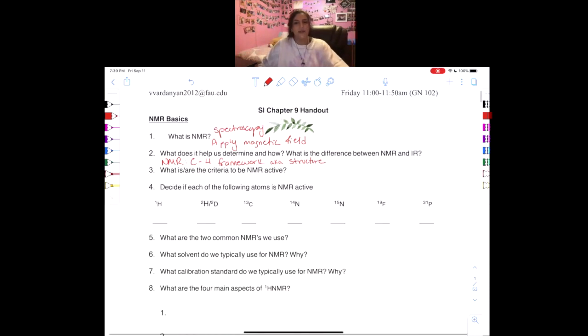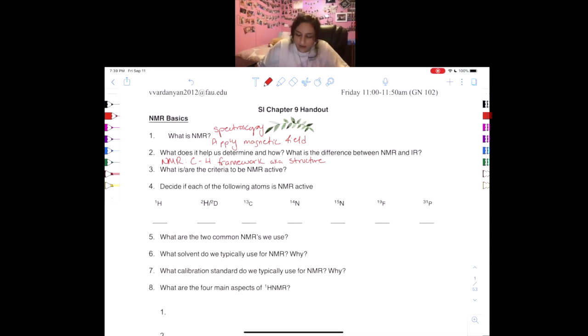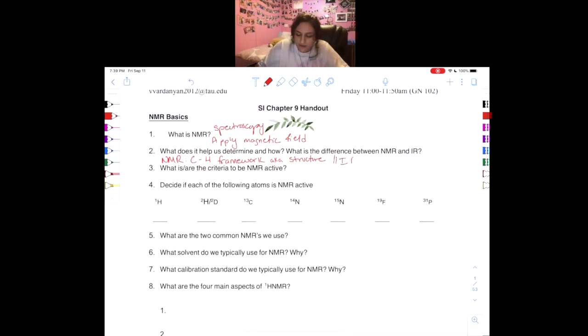And how is this different than IR? Well, IR tells us functional groups. So they are both forms of spectroscopy, but one tells us about structure, one tells us about functional groups.